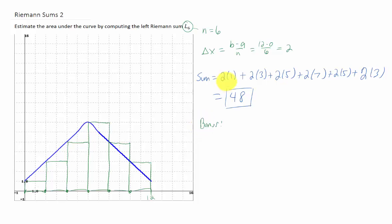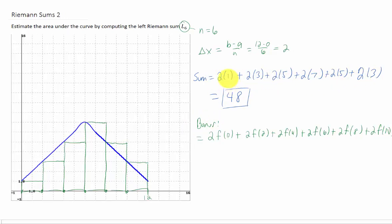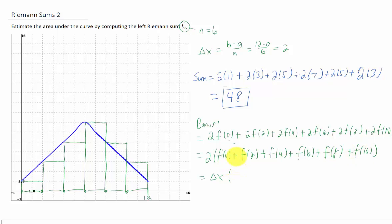As a bonus, let's rewrite this sum like we did in the last video. The numbers 1, 3, 5, 7, 5, and 3 came from function values at the left endpoints, which could be written in this form. We can factor out a 2, which was just delta x, and instead of giving specific values for all the endpoints, we can call them x1 through x6. Of course, this is inconvenient to write. We have summation notation to help us.